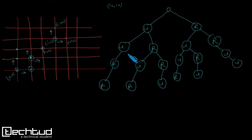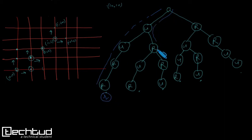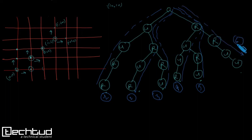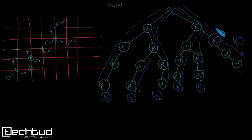We have now explored all possible paths from the origin. Counting them: path 1, path 2, path 3, path 4, path 5, path 6 — six distinct paths to reach 2,2. Notice that in every path you take exactly two up moves and two right moves.